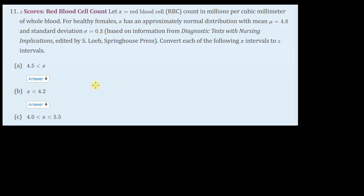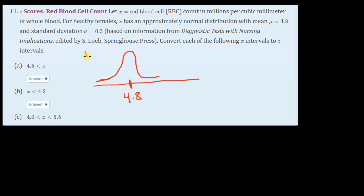So normally distributed — if I were to draw this, it's a bell-shaped curve. It's kind of a narrow looking curve because that 0.3 standard deviation is kind of small. Centered on 4.8. This is the distribution of X, which is the red blood cell counts. So mu equals 4.8, sigma is 0.3.